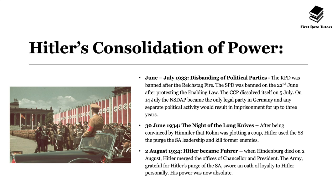Between June and July 1933 there was the disbanding of political parties. The KPD was banned after the Reichstag fire, the SPD was banned on 22nd June after protests over the Enabling Law, and the CCP dissolved itself voluntarily on 5th July. On 14th July the NSDAP — the Nazi party — became the only legal party in Germany, and any separate political activity would result in imprisonment for up to three years.